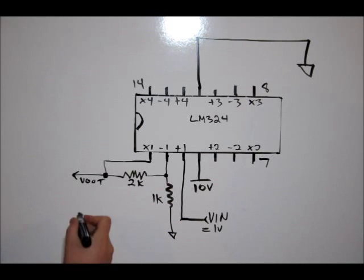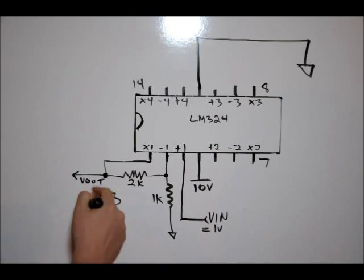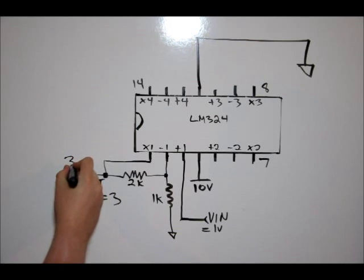Our Vin is 1 volt. 1 volt multiplied by a gain of 3. Our Vout is 3 volts.